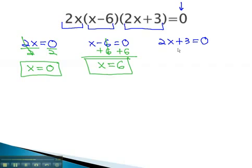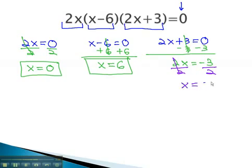To solve the third factor, we start by subtracting 3 to give us 2x equals negative 3. Finally, dividing by 2 gives us our final possible solution for x of negative 3 halves. When x is negative 3 halves, the last factor is 0, multiplied by the others would always be 0.